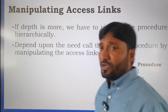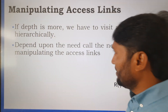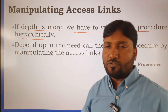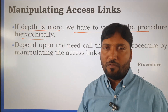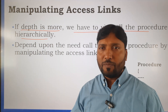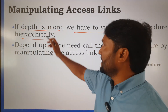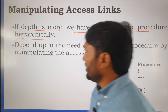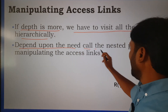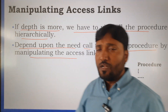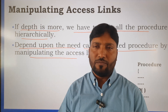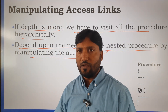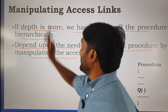The fifth option is manipulating access links. If depth is more, we have to visit all the procedures hierarchically. If there are many nested functions, the depth increases. Depending on the need, we call the nested procedures by manipulating the access link. If there is a need, use nested functions; if there is no need, then manipulate the access link based on the requirement. That is called manipulating the access link.